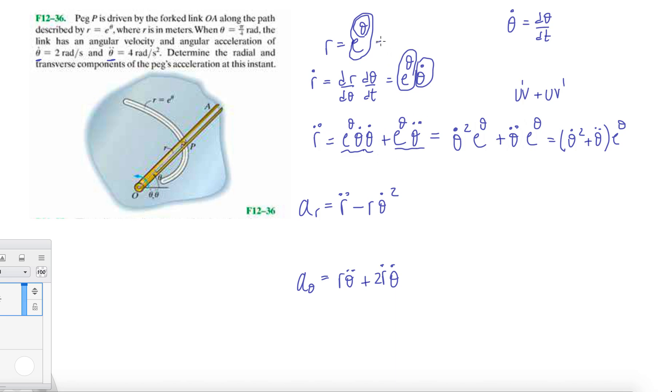What does r come out to when you plug it in? When you plug in pi over 4 up here, you should get 2.193. When you plug in your values, which is e^(π/4), theta dot is 2, so this is e^(π/4) times (2 squared plus theta double dot is 4), and that is equal to e^(π/4) times 8. So I have this as 17.546 meters per second squared. That's r double dot.